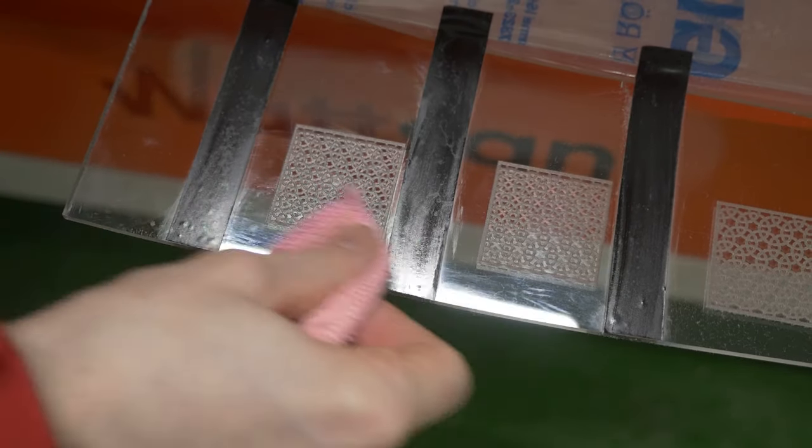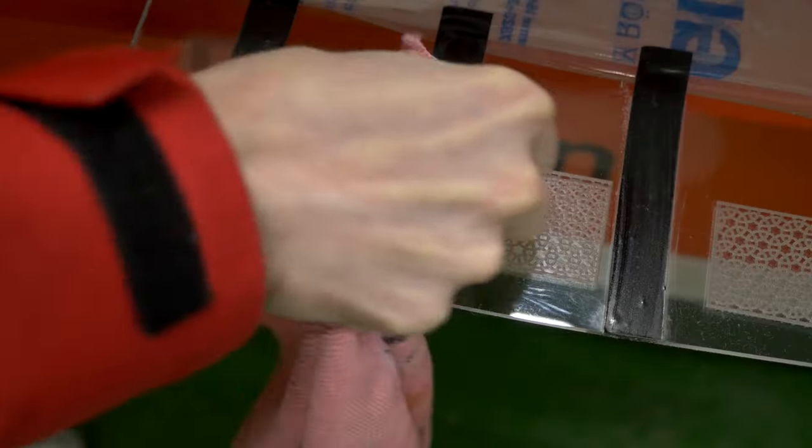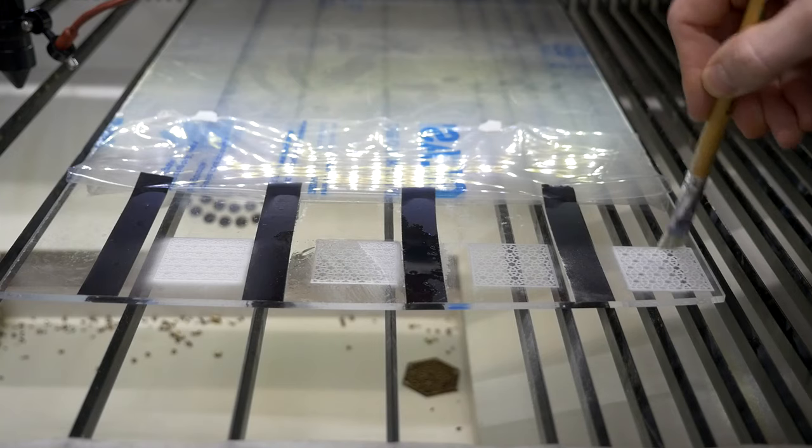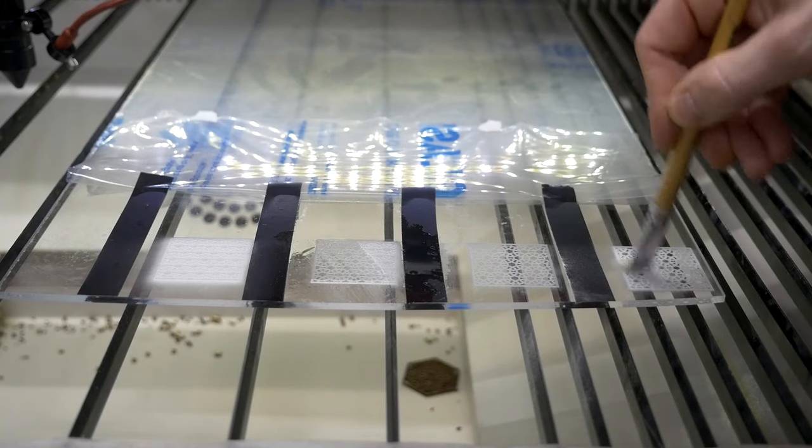Let's check the results. When engraving with blowing, hard-to-remove white coating remains on the surface.